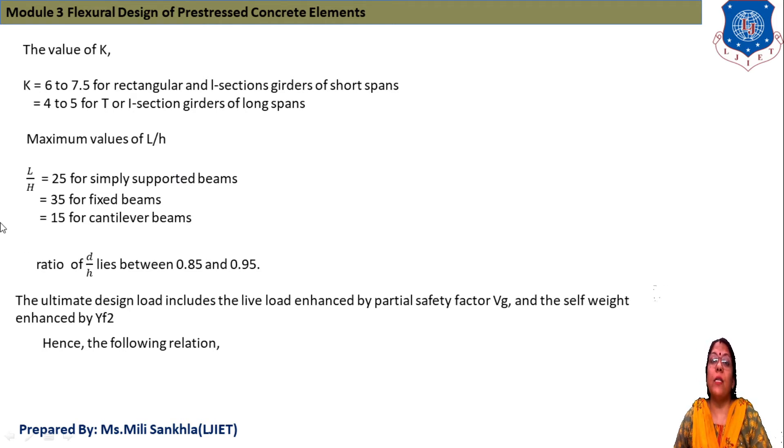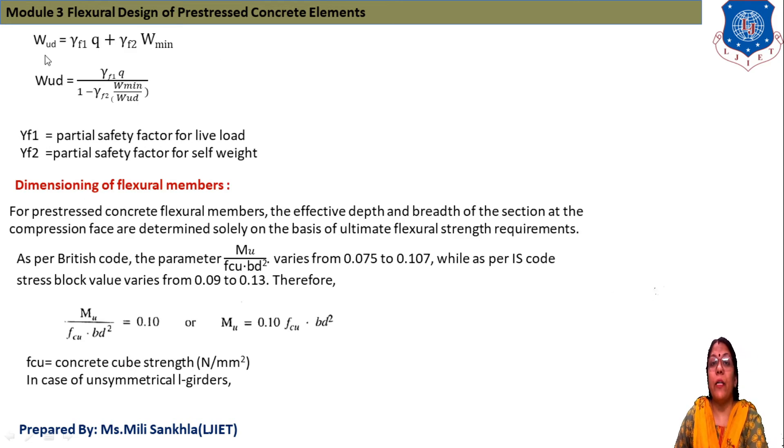These design steps are for flexural design. This equation is used when we solve examples of post-tensioned and pre-tensioned beams. The ratio D/H is between 0.85 to 0.95. Ultimate design load includes live load by partial safety factor γF1 and self-weight enhanced by γF2. The relation is W_UD = γF1 × Q + γF2 × W_min.